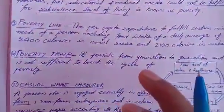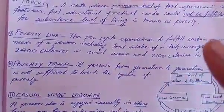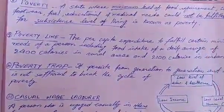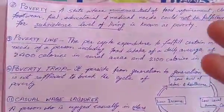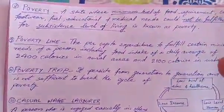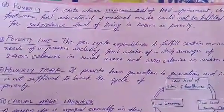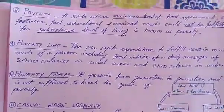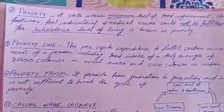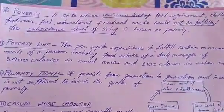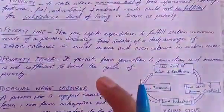Poverty trap — poverty trap ek bahut hi vicious cycle hota hai jisme jo ghus gaya uski peedhiyan nikal jaati hain. Bahut saari movies mein aapne suna hoga ki aadmi to mar jaata hai lekin jo karz rehta hai woh baaki rehta hai — uske bachche chukate hain, phir unke bachche. Yeh hai poverty trap.